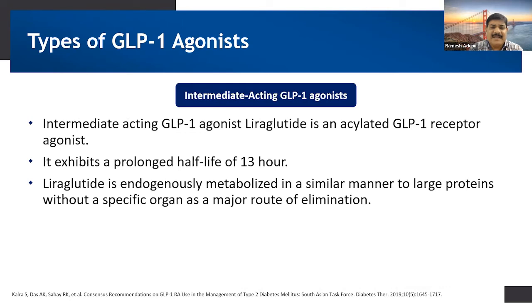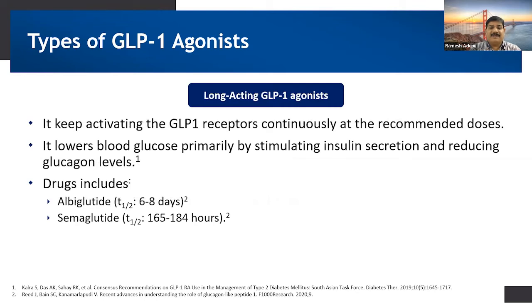Intermediate-acting GLP-1 agonists — for example, liraglutide — is an acylated GLP-1 receptor agonist. It exhibits a prolonged half-life of up to 13 hours and is endogenously metabolized the same way as large proteins without any specific organ or major route of elimination. Long-acting GLP-1 agonists such as albiglutide and semaglutide keep activating GLP-1 receptors continuously and lower blood glucose levels primarily through stimulating insulin secretion. The half-life of albiglutide is 6 to 8 days, whereas semaglutide is 165 to 184 hours.